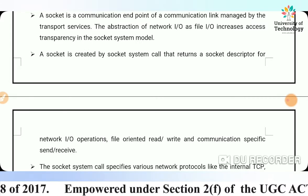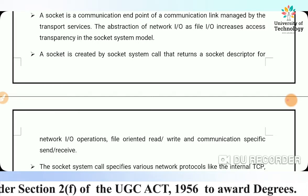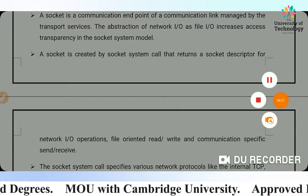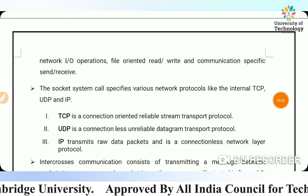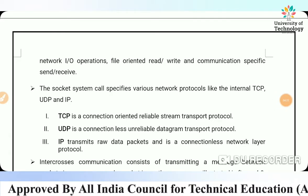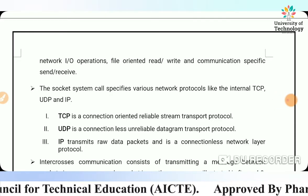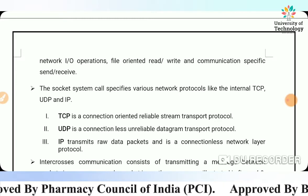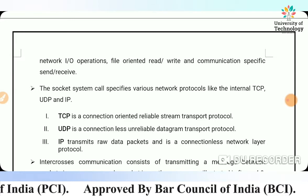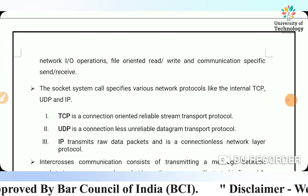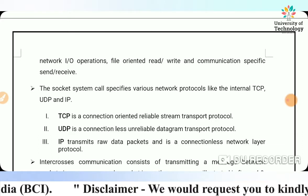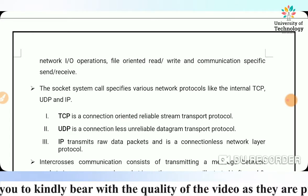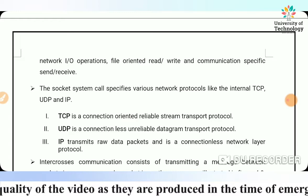File-oriented read/write and communication-specific send/receive operations are supported. The socket system call specifies various network protocols such as TCP, UDP, and IP. TCP is a connection-oriented reliable stream transfer protocol. UDP is a connectionless, unreliable datagram transfer protocol. IP transmits raw data packets and is a connectionless network layer protocol.